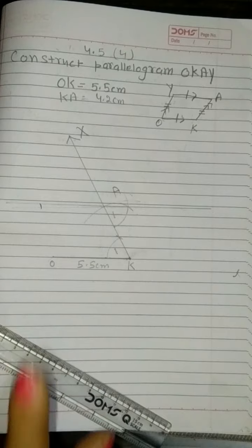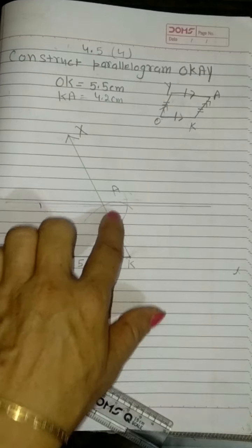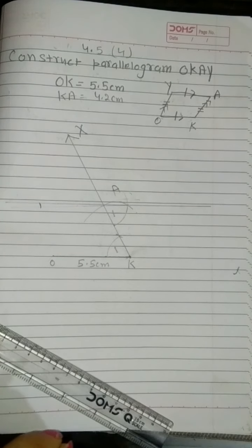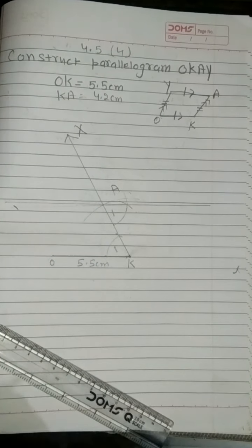Why? Because in parallel lines, alternate angles are equal. So in this way I draw this parallel line.